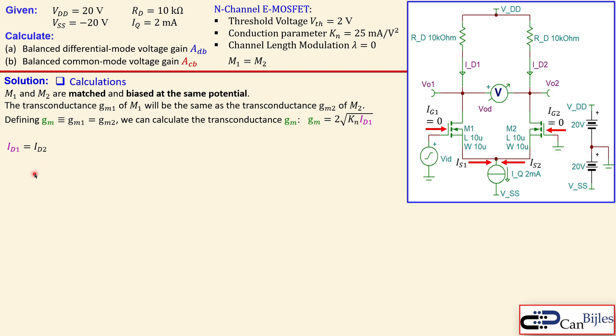So ID1 is equal to ID2. And that will be in the symmetric operation, because we see here the tail current, which is ideal 2 milliamps, will be then just half of that. 2 milliamps over 2 will be just 1 milliamp. So 1 milliamp will be flowing in this branch, and also 1 milliamp in that branch, because the gates are 0 amps.